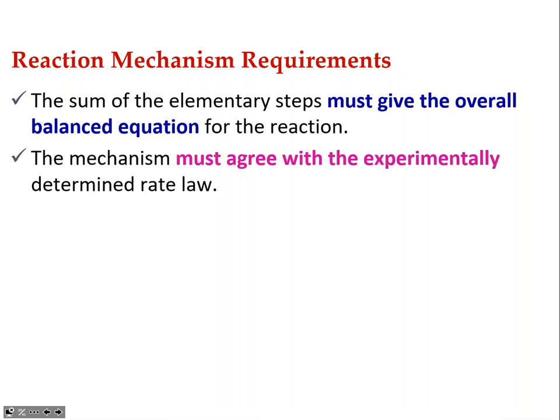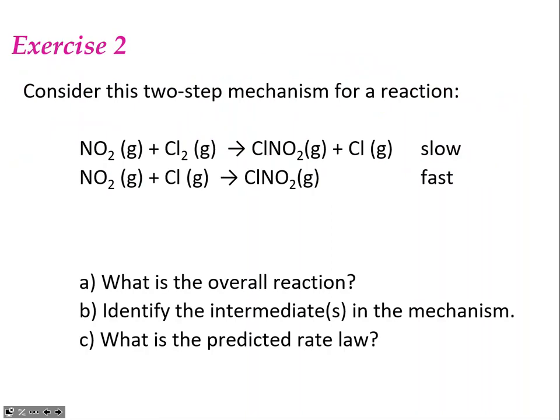The other requirement is that the mechanism must agree experimentally with the rate law. If the rate law has been determined from data and you evaluate a mechanism by looking at the slow step — the rate-determining step — and it produces the same rate law that was experimentally determined, then it would be considered a valid possible mechanism for the reaction.